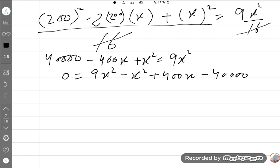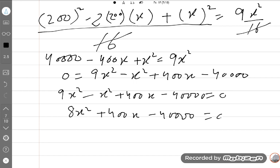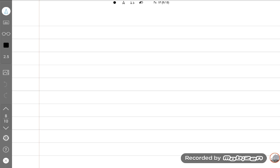0 is equal to 9x squared minus x squared plus 400x minus 40,000. I can write this. There is no problem. 4,000 not 40,000. So, 8x squared plus 400x minus 4,000 is equal to 0 and we will take 8 common. x squared plus 50x minus 500 is equal to 0. In the next page, it becomes the quadratic equation.